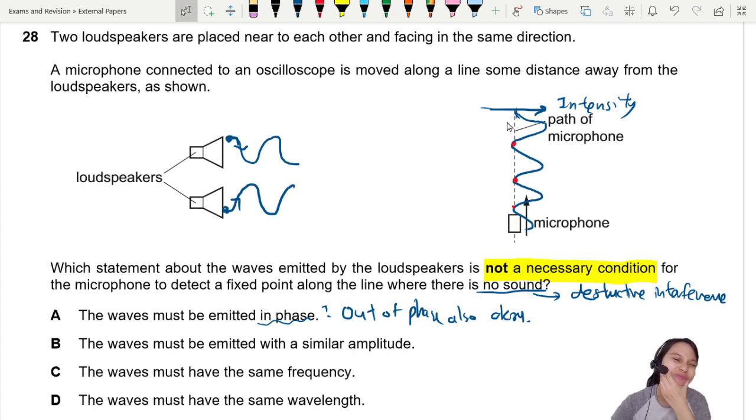Out of phase is okay, but what should replace this sentence is: the waves emitted must have a constant phase difference. That is a necessary condition - constant phase relationship. So this could be the answer. Let's circle it and check the rest.